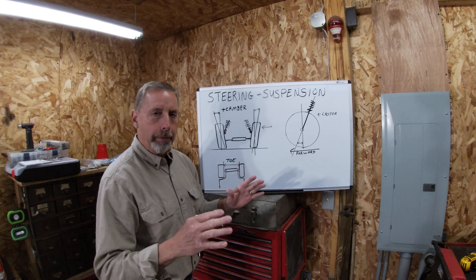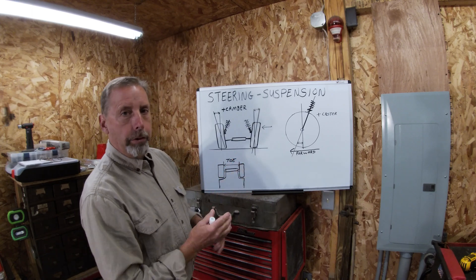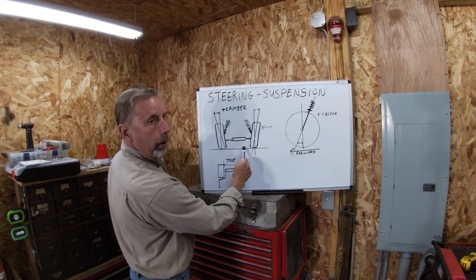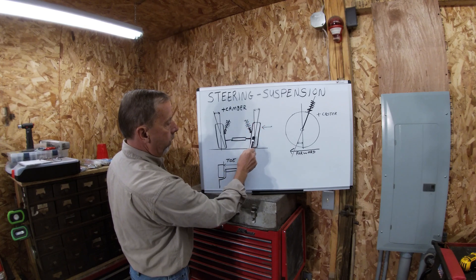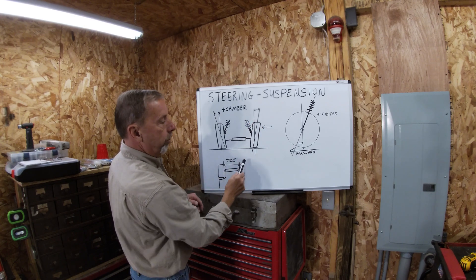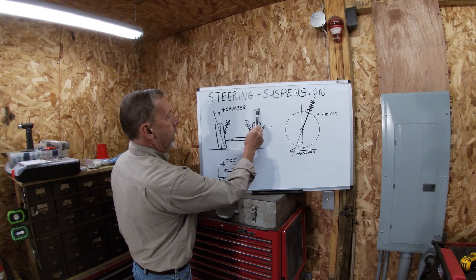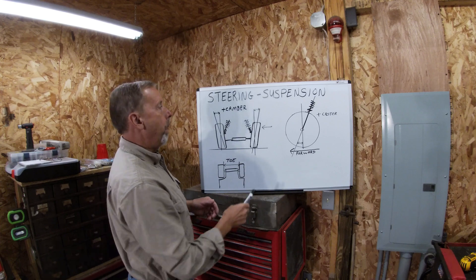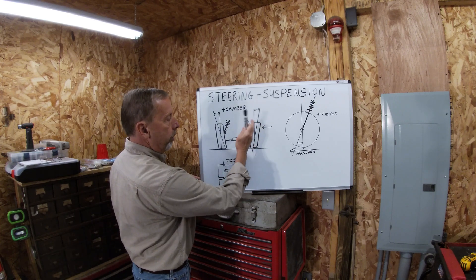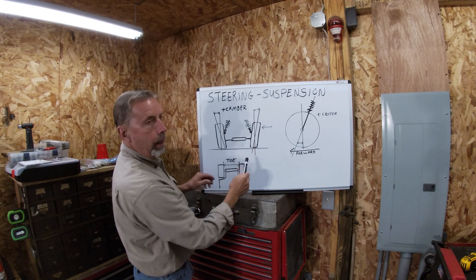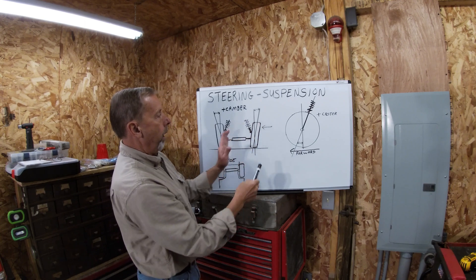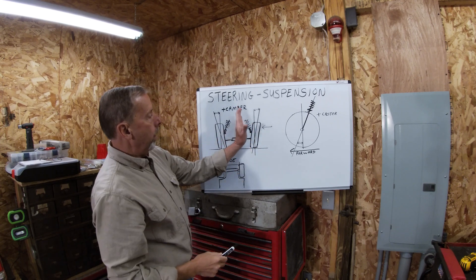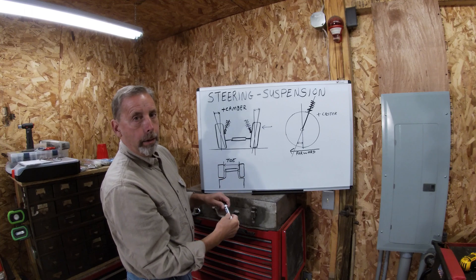Generally, everything is set at the factory with a positive camber, which is tipped out. This line here is true vertical — that's 90 degrees from the road. This line follows the center line of the tire. That angle is the camber, and usually on most cars that's right around a half-degree positive. Positive is outside of the center line. If a car's in a collision and this wheel gets bent in, the center line of the tire can move in of this true vertical — that would be negative camber.